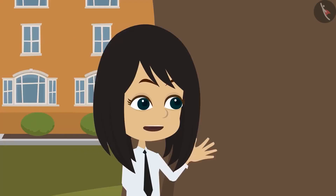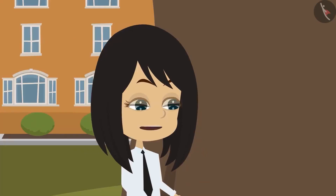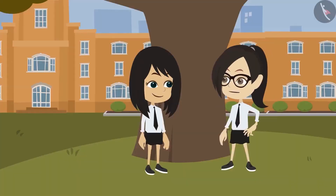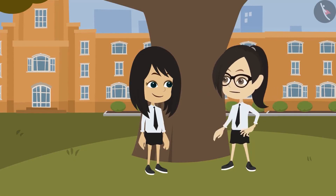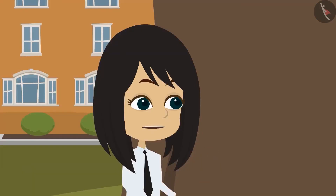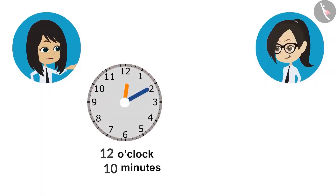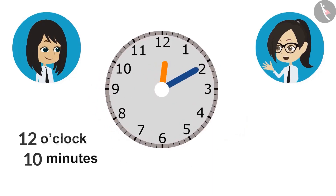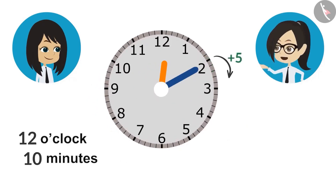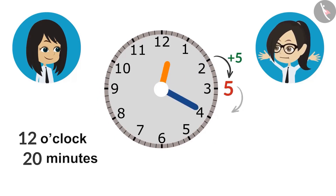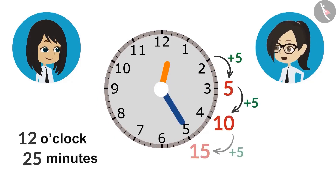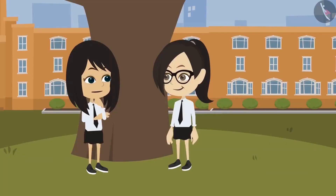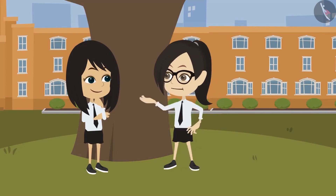Alright, Vandana, first let us find out how long our lunch break is. Our lunch break starts at 10 minutes past 12 o'clock and ends at 30 minutes past 12 o'clock. Let's draw them first. The minute hand is at 2 at the start. From 2 to 3 is 5 minutes, till 4 it will be 10, then 15, 20. This means our lunch break is 20 minutes long.